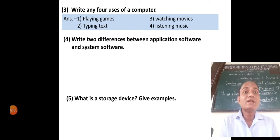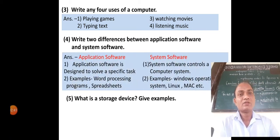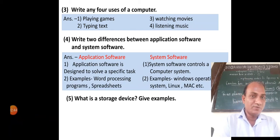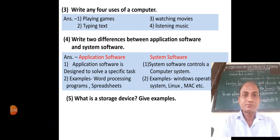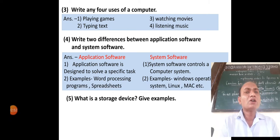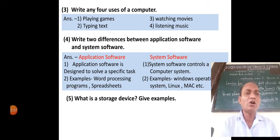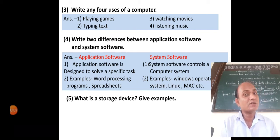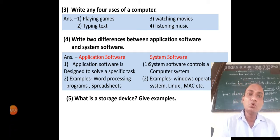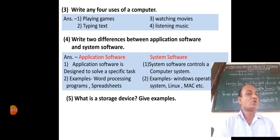The next question: write two differences between application software and system software. First difference — application software is designed to solve a specific task, just like word processing programs and spreadsheet. All these are application software; they are used to solve specific tasks.